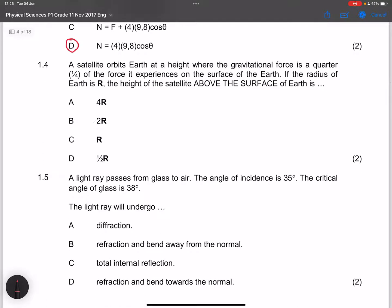Then the next one, they say a satellite orbits Earth at a height where the gravitational force is a quarter of the force it experiences on the surface of the Earth. Let's just say for argument's sake, here's Earth. So in this case, if we had placed the satellite there, it would experience a force F. Let's say that the radius of the Earth is R, which means that the satellite would experience force F. Note force F would simply be G times the mass of the Earth times the mass of the satellite divided by R squared. They say if the radius of the Earth is R, the height of the satellite above the surface of the Earth is.